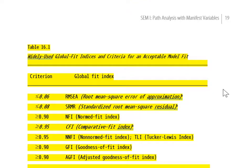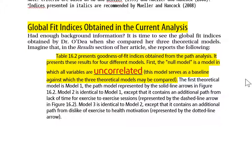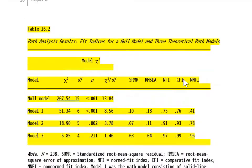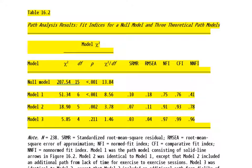Still on page 19, Table 16.2 presents goodness-of-fit indices obtained from the path analysis for four different models. First, the null model — a model in which all variables are uncorrelated — serves as a baseline against which the three theoretical models are compared. Model 1 was Dr. O'Day's initial model consisting of the solid line arrows; Model 2 added an additional path; Model 3 added yet another path.